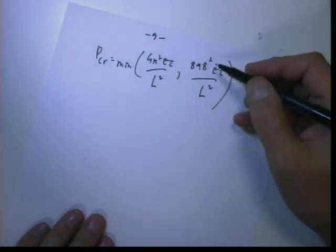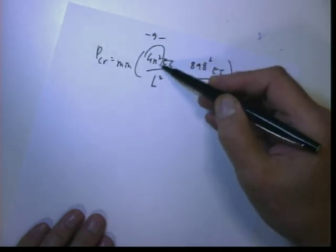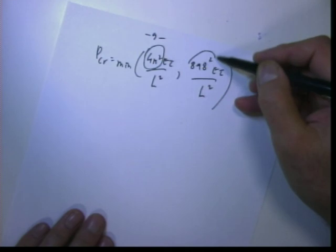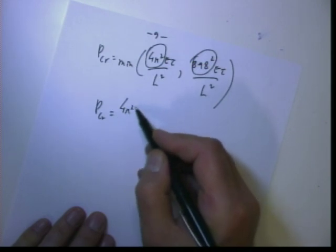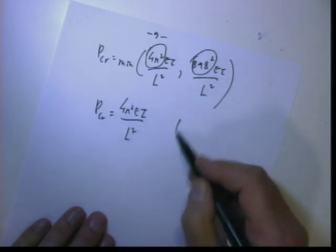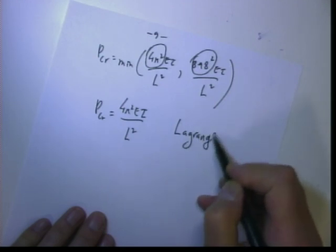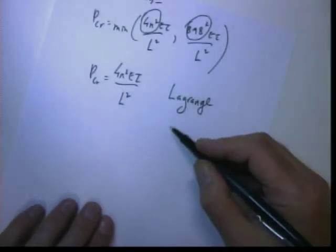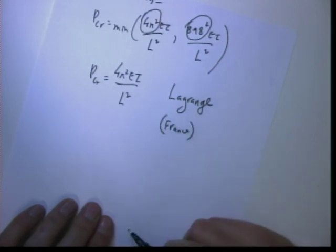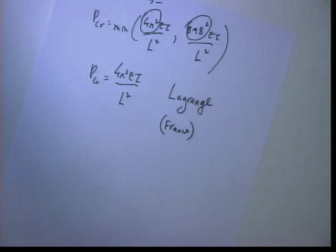So solution is either what we got before or this, minimum, smaller. P_critical is minimum of 4π² EI over L², and 8.98² EI over L². Now, so this is about 40, this guy, and this is about 81. So P_critical equals 4π² EI over L² belongs to Lagrange, famous French engineer. So this is 4 times bigger than for simply supported case.